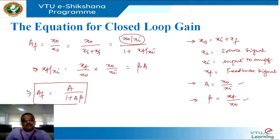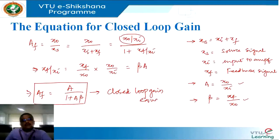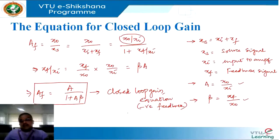This is the closed loop gain equation: Af = A / (1 + Aβ), and this is for negative feedback. This is very important — we must not forget that we derived this equation for negative feedback.